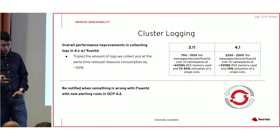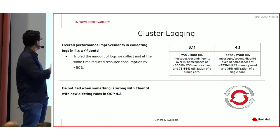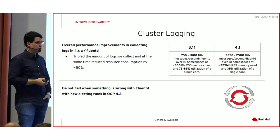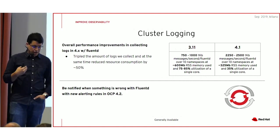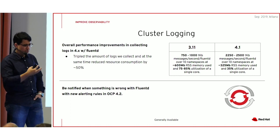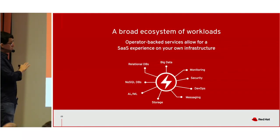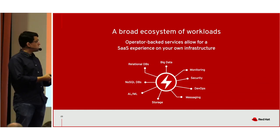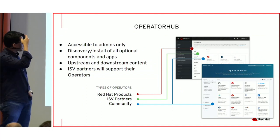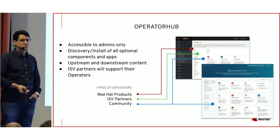With cluster logging — specifically if you're running 3.11 — starting with 4.1 we made a lot of progress on optimization and performance. We are now able to ingest about three times the amount of logs in the same cluster, while also reducing general resource consumption by 50%. With 4.2, we are integrating monitoring of the logging infrastructure into general cluster monitoring, so you get alerts when that infrastructure isn't working properly. On the workloads side, I'd highly encourage you to browse the Operator Hub and see if anything there is interesting, or submit your own operators.